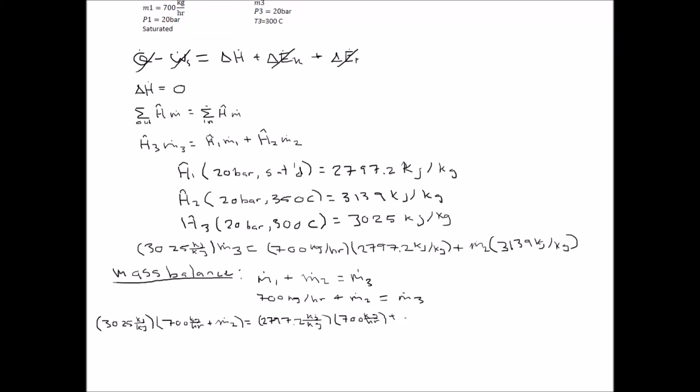Solving this equation explicitly for the mass flow rate of stream two, we find that the mass flow rate is 1,398.8 kilograms per hour.